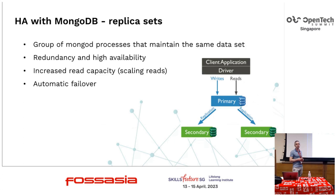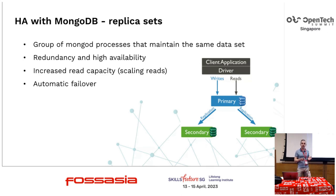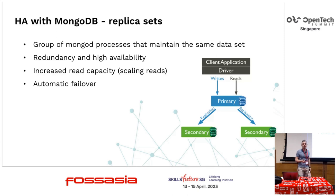MongoDB achieves availability by replication — a group of processes that maintain the same data set. There is a concept of a primary, where all writes go from the application connecting via a driver. Secondary nodes provide redundancy for high reliability and can be used for scaling reads. The driver has options for read preference: primary, secondary, primary preferred, secondary preferred, or nearest. Failover in a MongoDB replica set is automatic — when the primary goes down, the remaining nodes form an election to decide the new primary, but there must be an odd number of voting members.